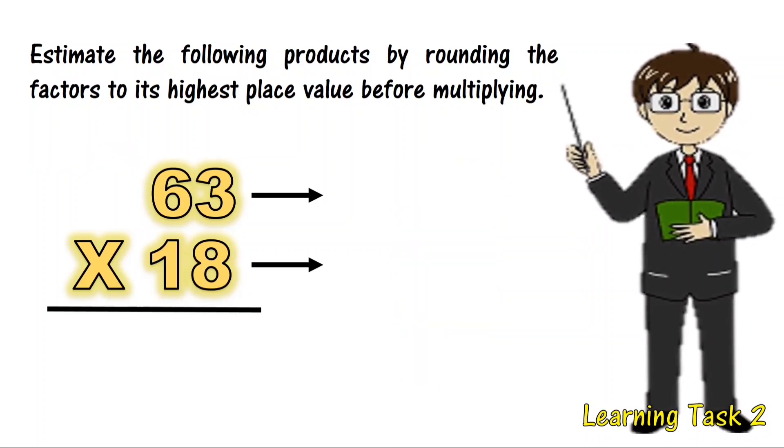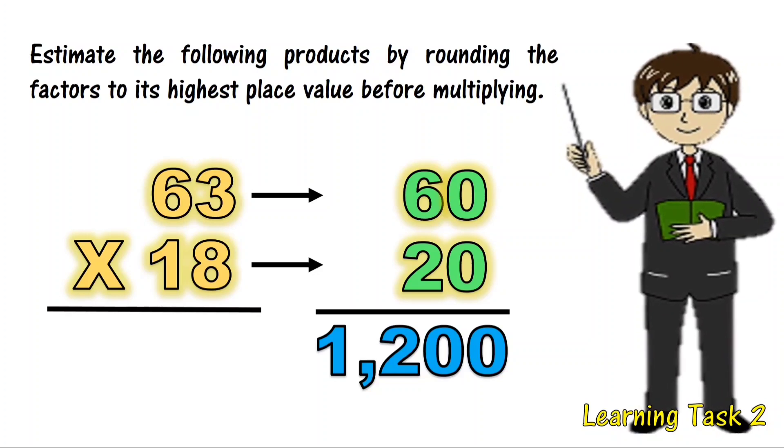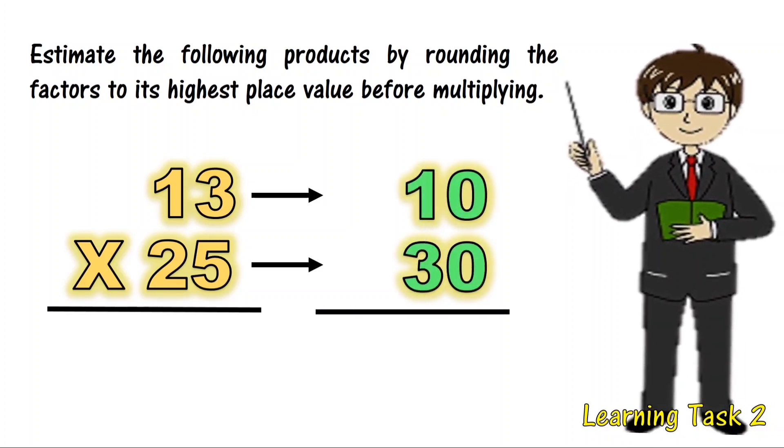Additional examples: 63 × 80, 60 × 20 equals 1,200. 63 × 200, 13 × 25, 30 × 25. 30 × 30 equals 900.